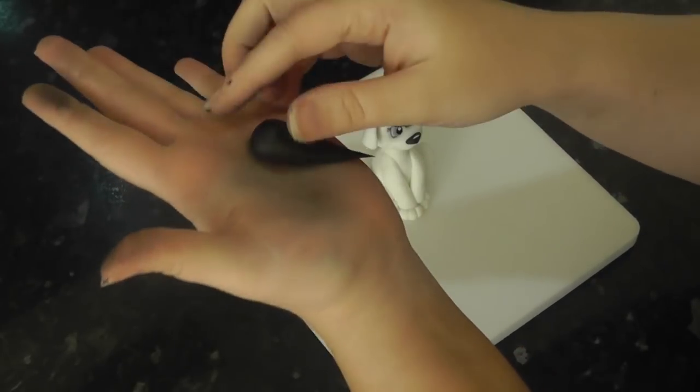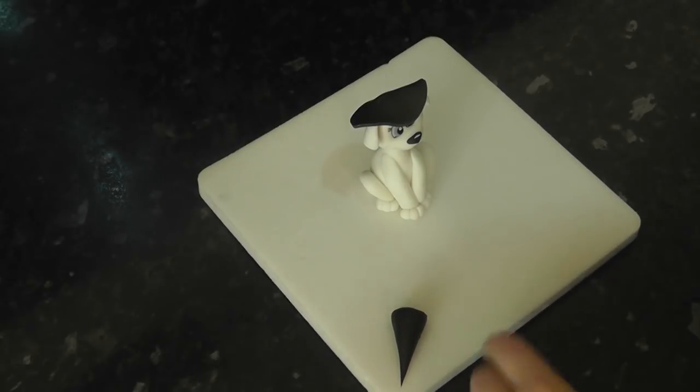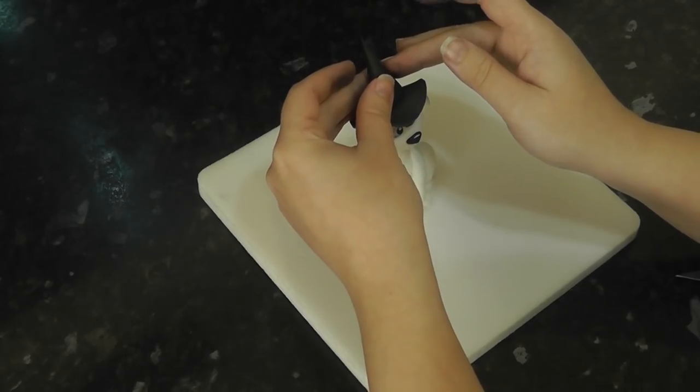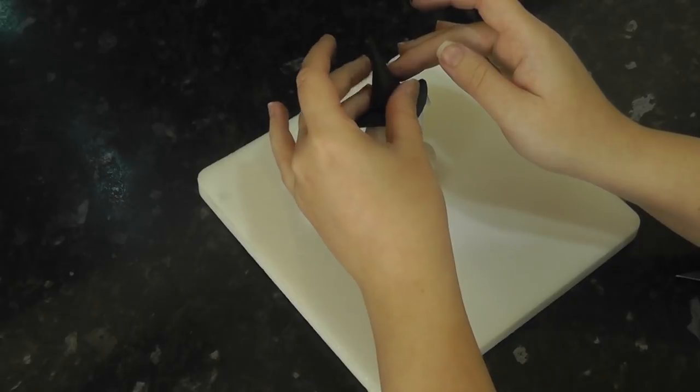The top of the hat is a cone of paste with the bottom chopped flat. Add this to the head and bend the top spike to make it crooked.